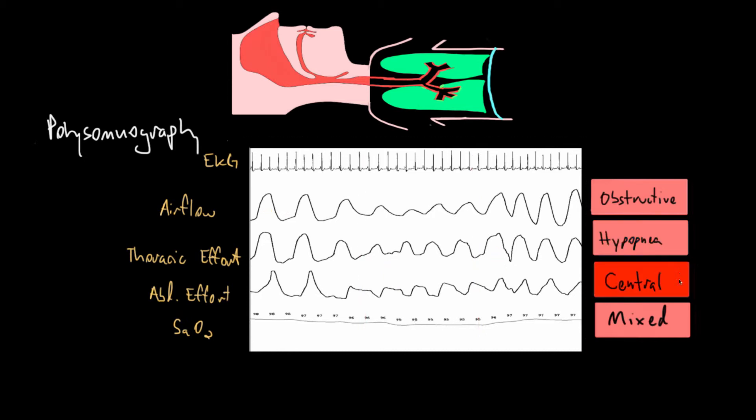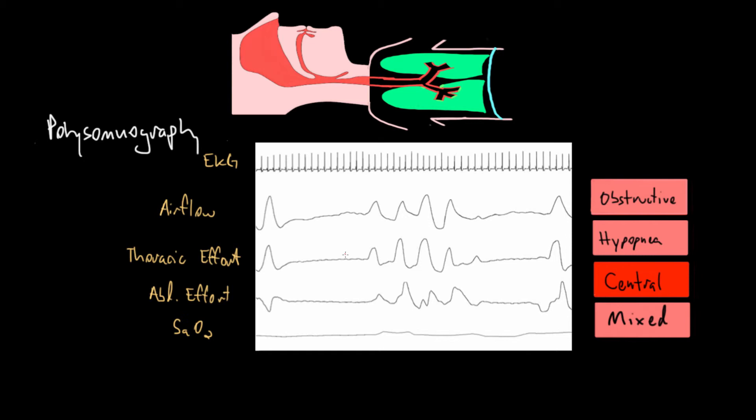The next one we're going to look at is a central apnea. Here we have an apnea because there's no signal getting to the muscles that would allow air to move in and out of the body. We see no effort between here and here, and between this second one and this one. Between these two red lines, we see no effort in the thoracic and abdominal areas, and because of that, we see no airflow. Our airflow amplitude is basically flat throughout this time. The key here is because there's no effort, there's no flow.